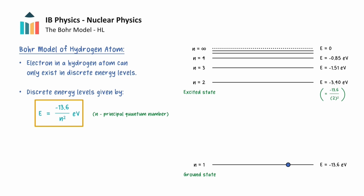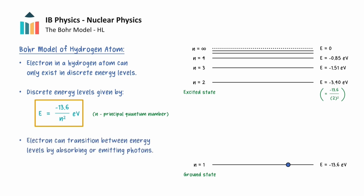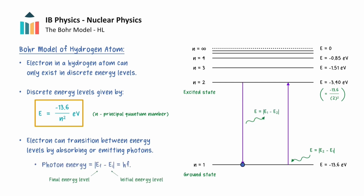Also in the Bohr model, the electron is able to transition between energy levels. To transition from a lower energy level to a higher energy level, the electron must absorb a photon with an energy exactly equal to the difference in energy between the two levels. On the other hand, an electron transitioning from a higher energy level to a lower energy level will emit a photon with an energy exactly equal to the difference in energy between the two levels.